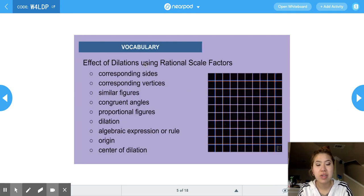So for the effect of dilations using rational scale factors, I just want to remind us that our rule usually looks something along the lines of x, y. If the number is less than 1, that means that this dilation shrinks the transformed shape. If the number is greater than 1, that means that the dilation enlarges the shape.